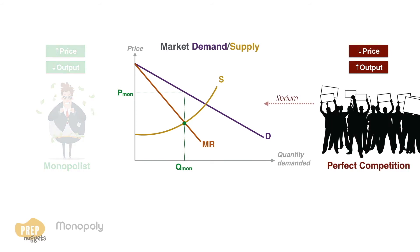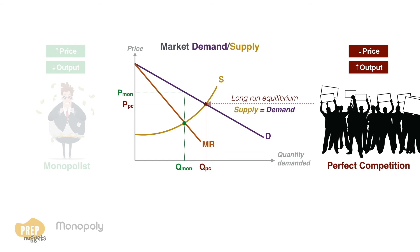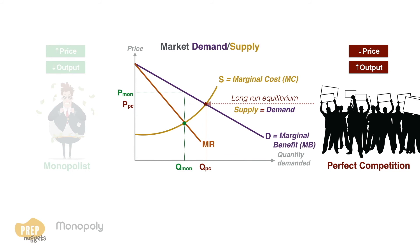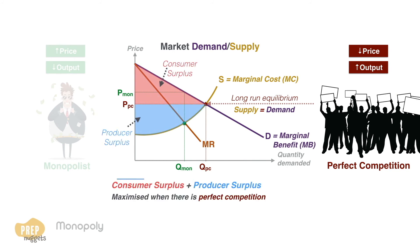Recall from the lesson on perfect competition that its long-run equilibrium is where supply equals demand. If we think of supply as the marginal cost and demand as the marginal benefit, this is the point where consumer surplus and producer surplus is maximized.